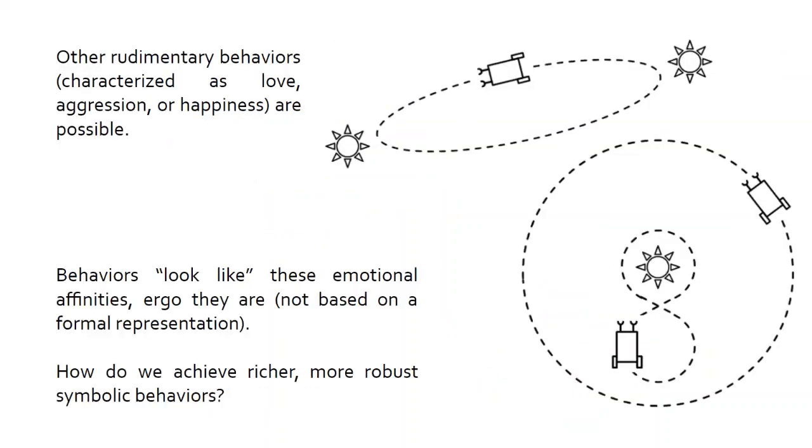The DBVs generate these rudimentary behaviors, characterized as love, aggression, or happiness. But in your typical Braitenberg vehicle, these behaviors have often been defined because they look like emotional affinities. For example, the love behavior is classified as such because it looks like it loves its stimulus or something like that. Those aren't based on a formal representation. They're just eyeball approximations. So how do we achieve richer, more robust, symbolic behaviors that might more accurately characterize the behaviors we're classifying them as?